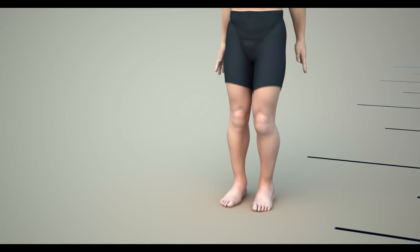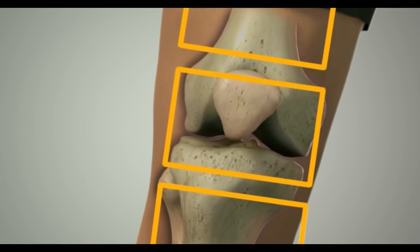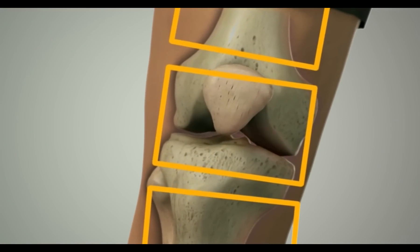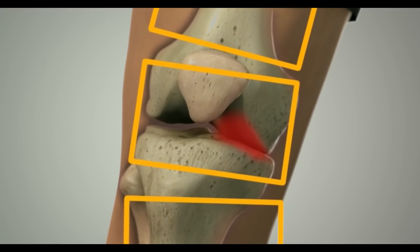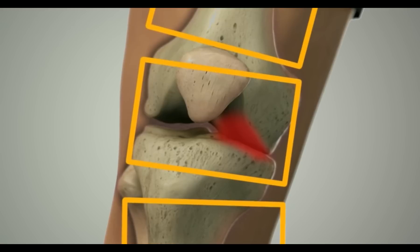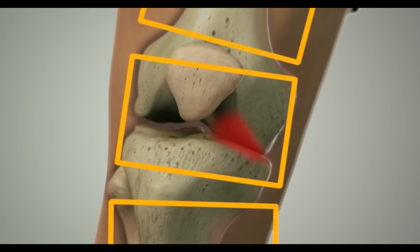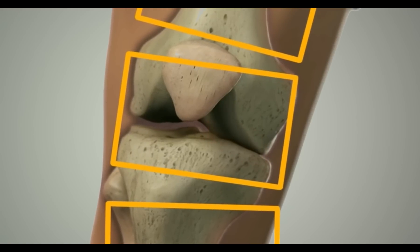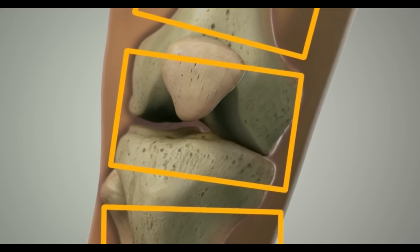When you stand or walk, the hip, knee, and ankle joints ideally should be vertically aligned, like stacked blocks. In an OA knee, the narrowed space and pain associated with the disease can often lead to an abnormal gait, which can throw off this natural alignment. The resulting misalignment is often associated with OA.